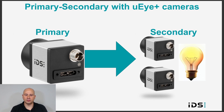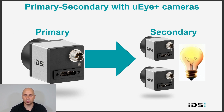Now that I demonstrated utilizing the flash and trigger separately, I will put both these concepts together by setting up a primary-secondary configuration. A primary-secondary configuration consists of one primary camera and one or more secondary cameras, in which the flash output of the primary camera is connected to the trigger inputs of the secondary cameras. Whenever the primary camera captures an image, it also triggers the secondary camera to capture an image at the same time. This enables the image capture to occur at precisely the same time for all cameras, which is useful for certain applications such as stereo vision, sports analysis, and many other applications that require multiple angles and precise synchronization.